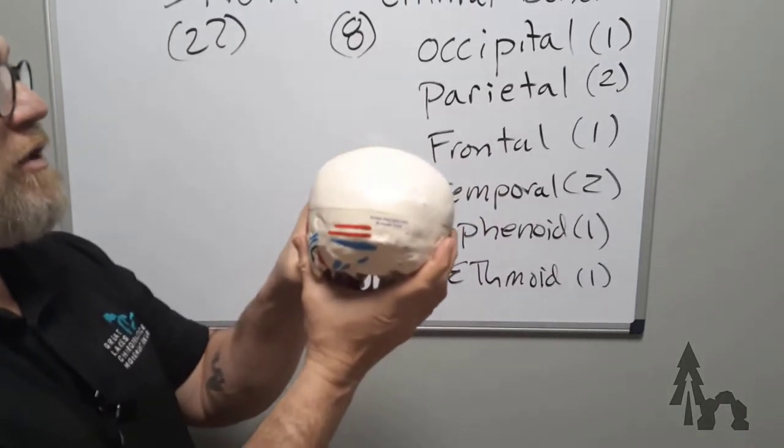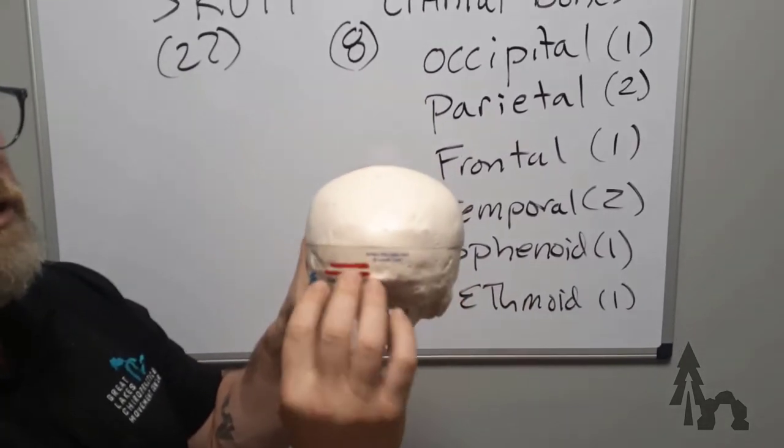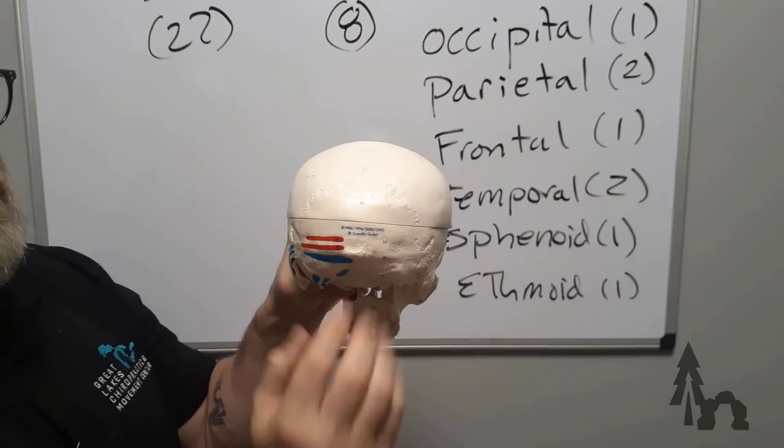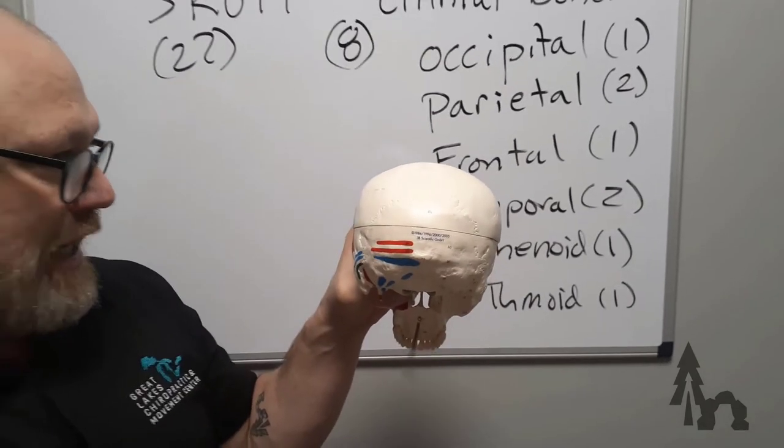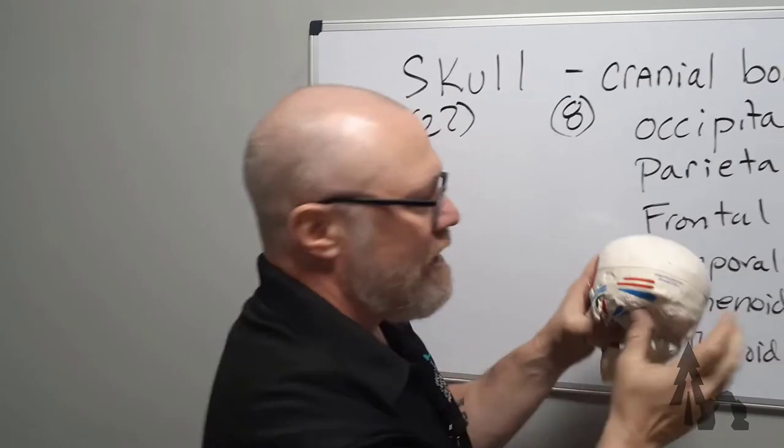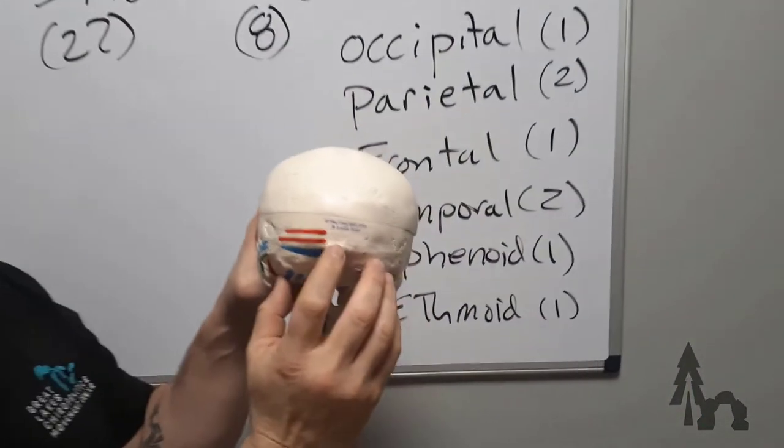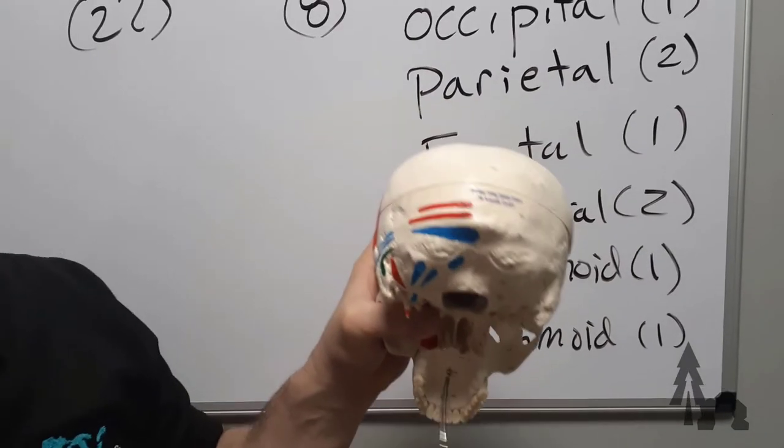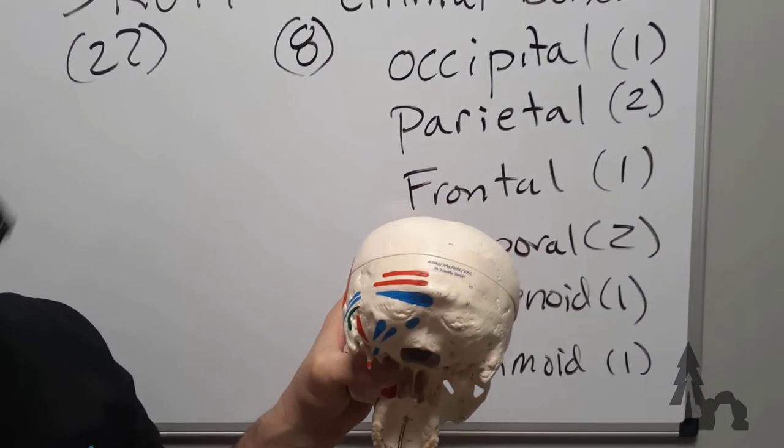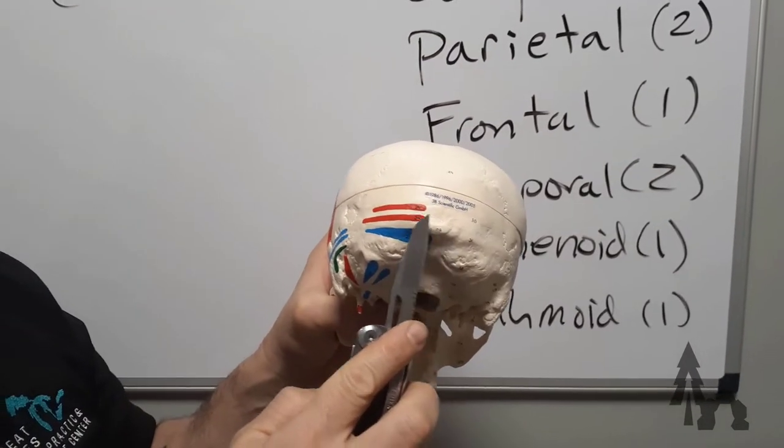The first bone we talked about is going to be the occipital bone, the occiput. This is the rear portion of your skull, your cranium. You can reach back and feel on the base of your own skull. You'll find this little bump. That's this little protrusion right here. This bump is called the external occipital protuberance.